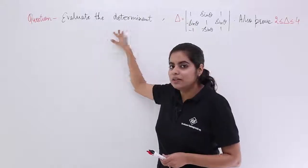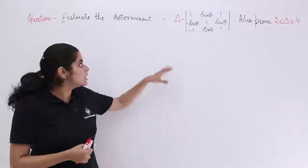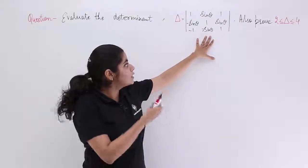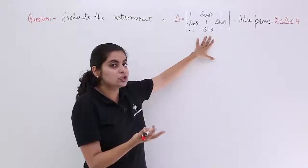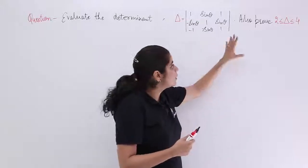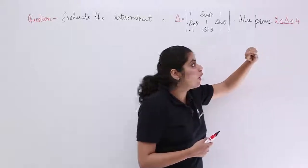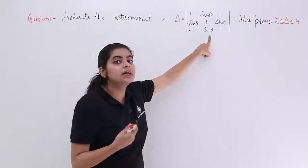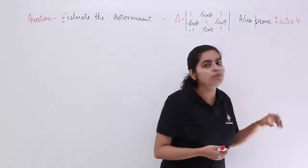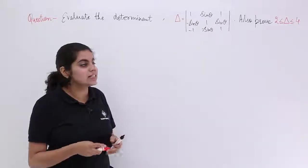The question is: evaluate the determinant involving trigonometric constants, trigonometric functions, sin theta, and 1. You also have to prove that delta — the determinant value — lies between 2 and 4, both inclusive. Let's see how to do this.